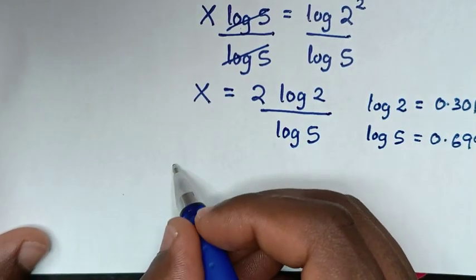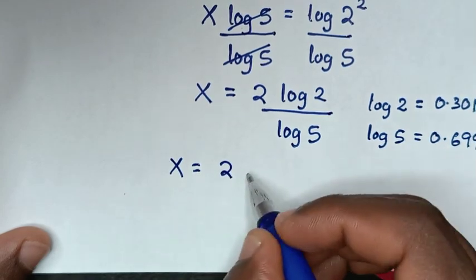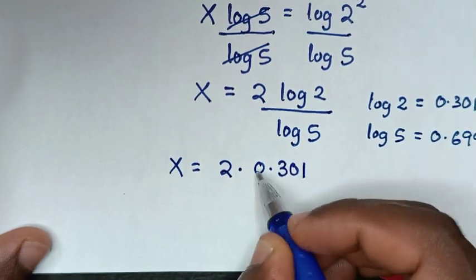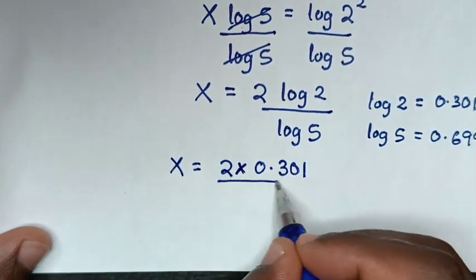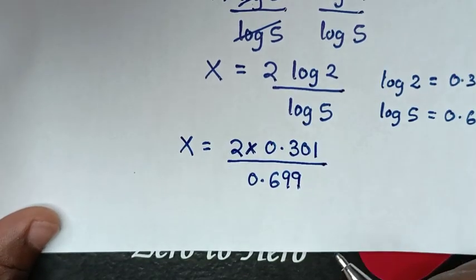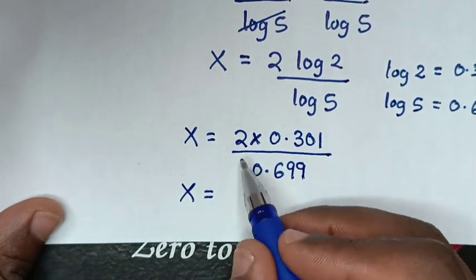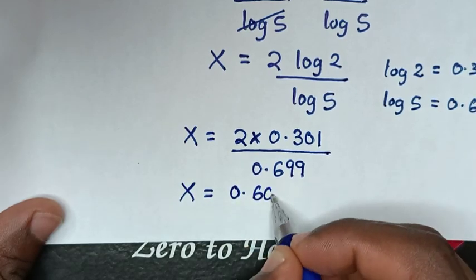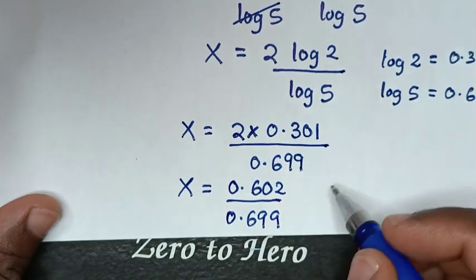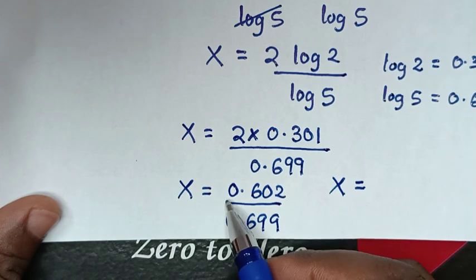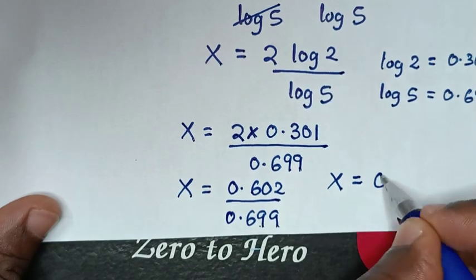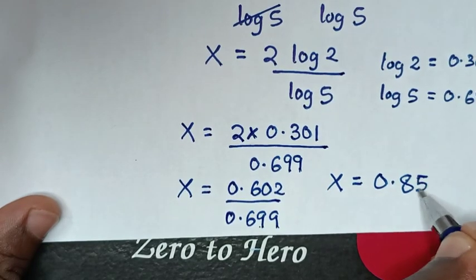So it will be x is equal to 2 times log 2, which is 0.301, over log 5, which is 0.699. Then it will be x is equal to 0.602 over 0.699. It is 0.858.